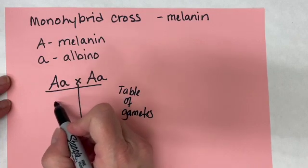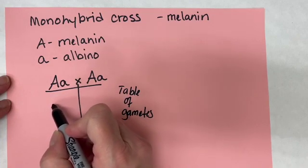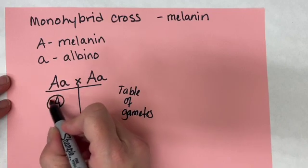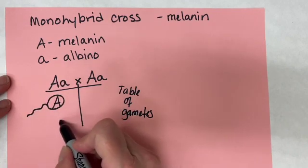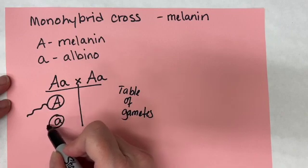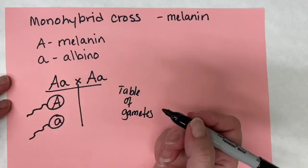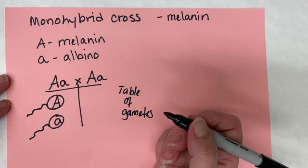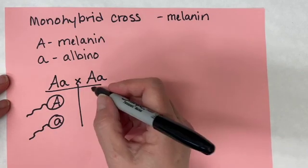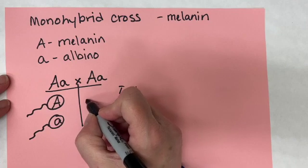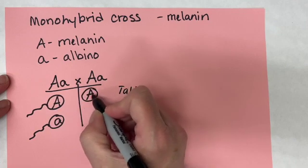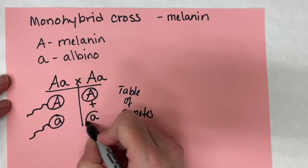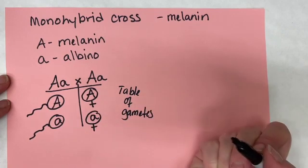This heterozygous individual — assuming that person's a male — can make one sperm that has a big A in it and one sperm that has a little a in it. Of course they have other genes in these sperm; we're just focusing on the ones for melanin right now. Same thing for this female: she can make one egg that contains a big A allele and one egg that contains a little a allele.